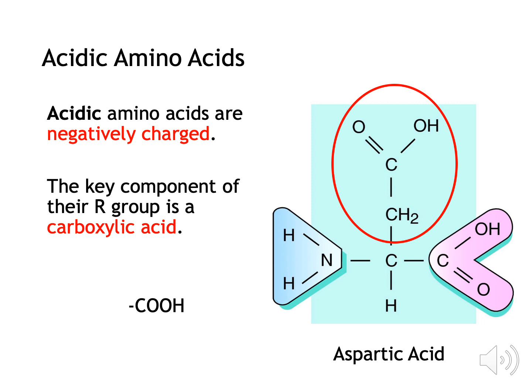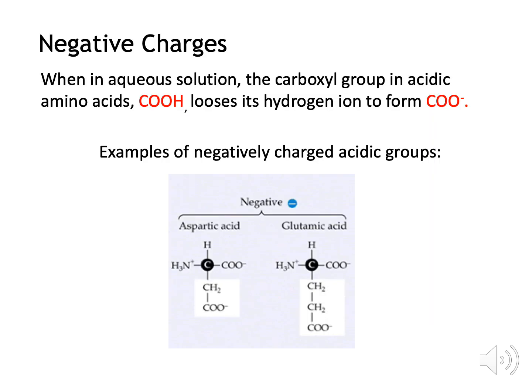Acidic amino acids have a carboxylic group in their R-group. The R-group can have other atoms, but if a carboxylic acid is included it is an acidic amino acid. Acidic amino acids are negatively charged — an example is aspartic acid. When we say acidic groups are negative in charge, this is due to them losing a hydrogen ion when they are in solution. When they lose the hydrogen ion, this makes the carboxyl group have a negative charge.